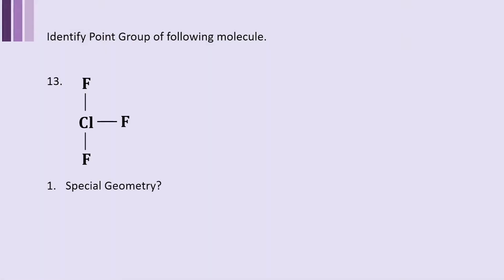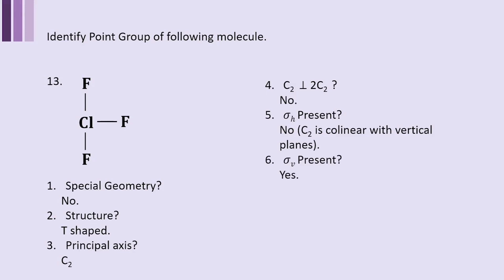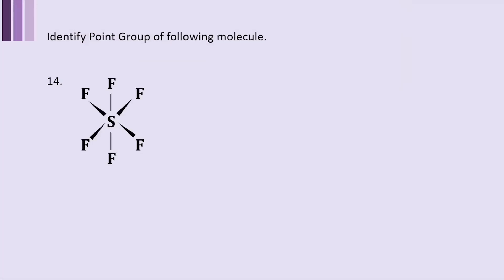The next example is TlF3 which we generally call as a T-shaped molecule. You can fit this structure to somewhere in the category of water molecule. The principal axis is C2. Are C2s perpendicular to two C2s? There is one C2 this way, but there is no other C2. Sigma H present? No. C2 is collinear with vertical planes, so does it have Sigma V? Yes, Sigma V is there. Point group is CNV, and being two, point group is C2V. Structurally this has to be equivalent to water with HOH bond.